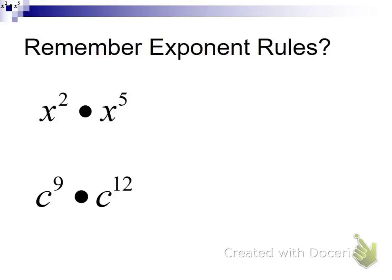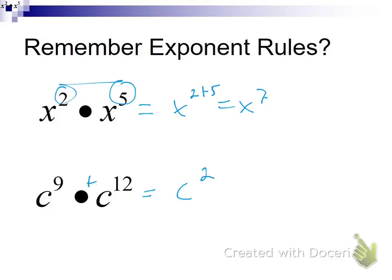For example, remember that when we multiply two like bases with exponents, we always added them. So, x² times x⁵ is going to be x to the 2 plus 5, or x to the 7th. Same thing: c to the 9th times c to the 12th — add those and you get c to the 21st. So, multiplying those guys turned into addition.